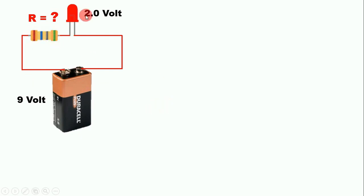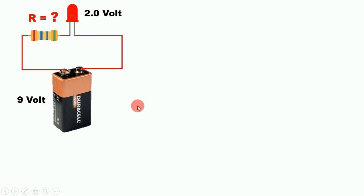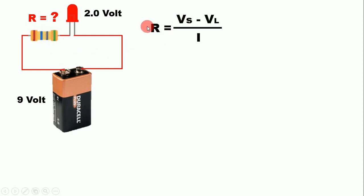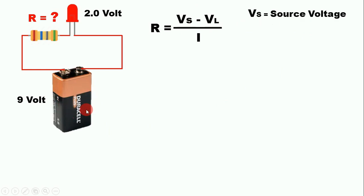For example I used an LED bulb here, but in place of this there can be any other electronic or electrical component that requires a particular voltage. To drop this voltage you use a resistor, and the calculation will be the same. To find the resistance value we use the formula: R = (Vs - Vl) / I. Vs means source voltage — the voltage being applied.